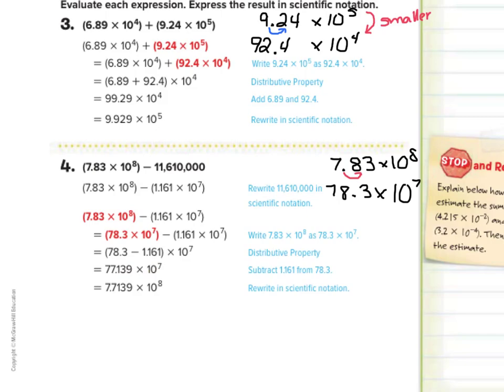This is not yet in scientific notation. We need to make this 7.7139 times 10 to something. We made the 77 smaller by one factor, so we need to make our exponent bigger to balance it out — from 10 to the seventh to 10 to the eighth. So our answer is 7.7139 times 10 to the eighth.